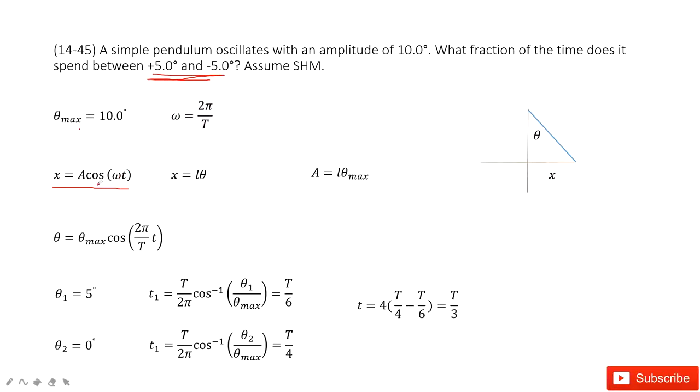And why we choose cosine? Because we think it starts at the maximum theta. Now we can see x is l times theta, and amplitude is l times theta max.